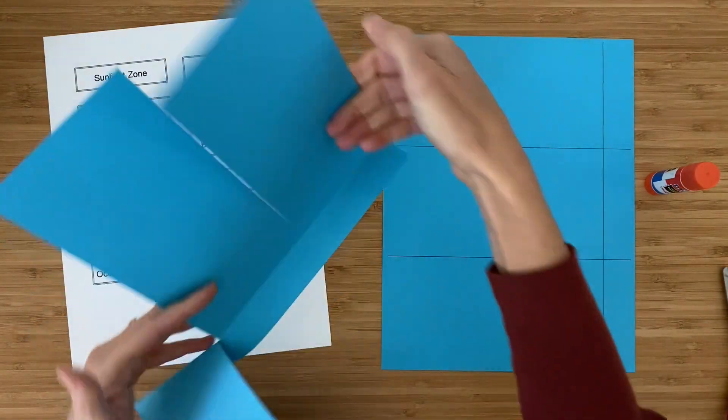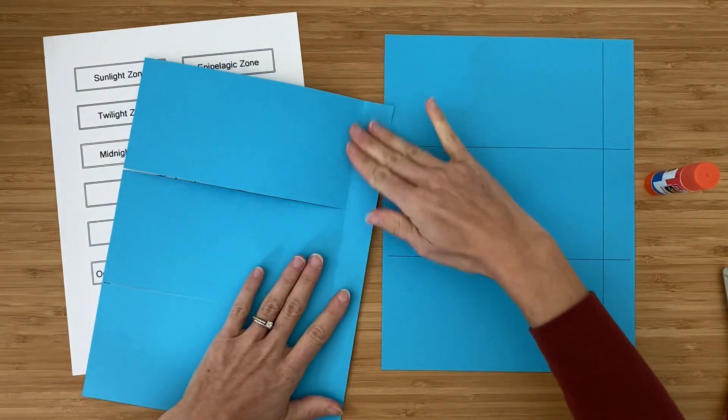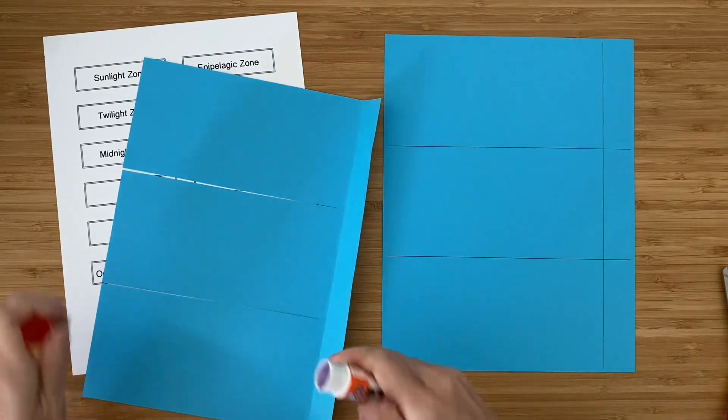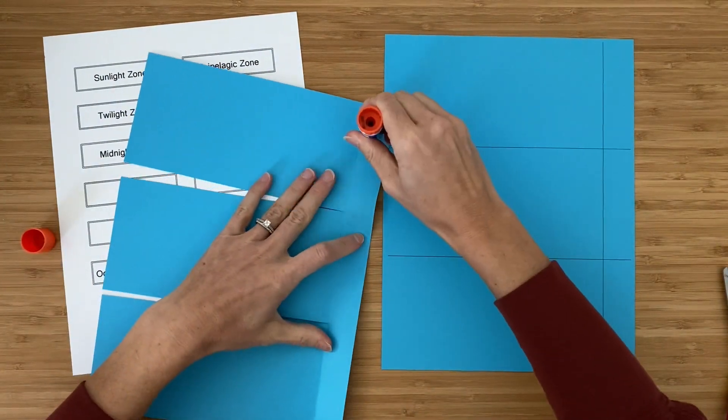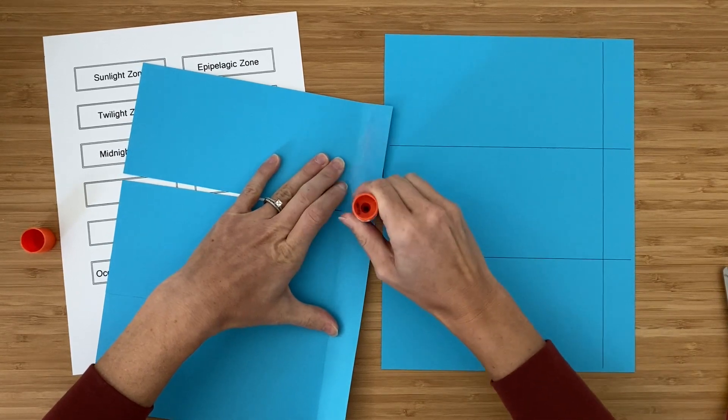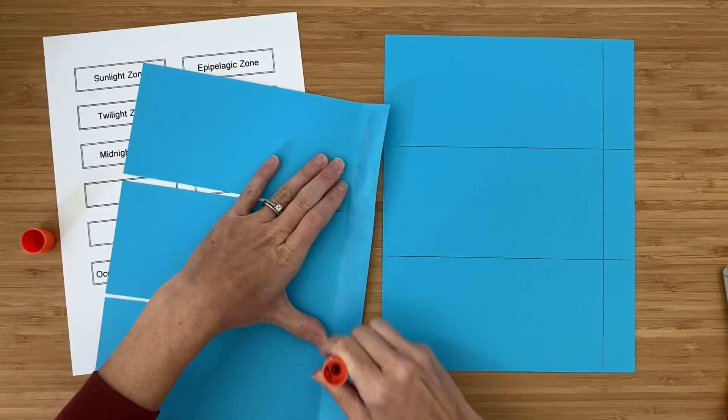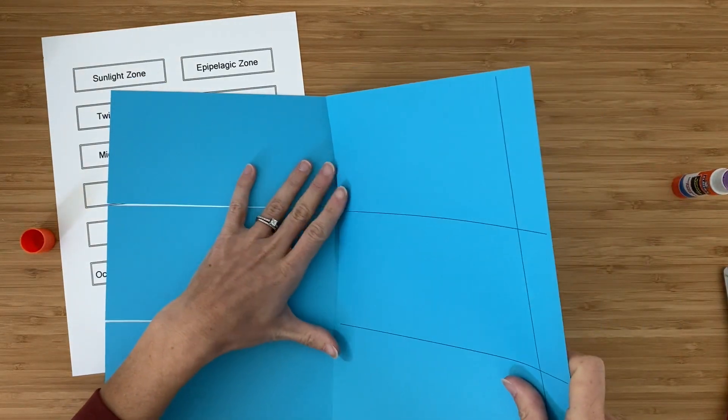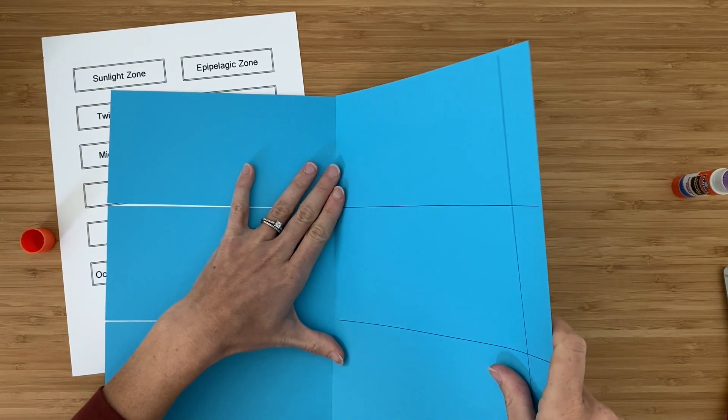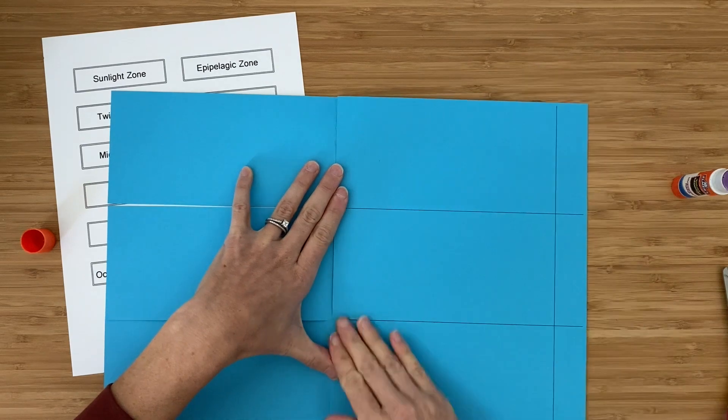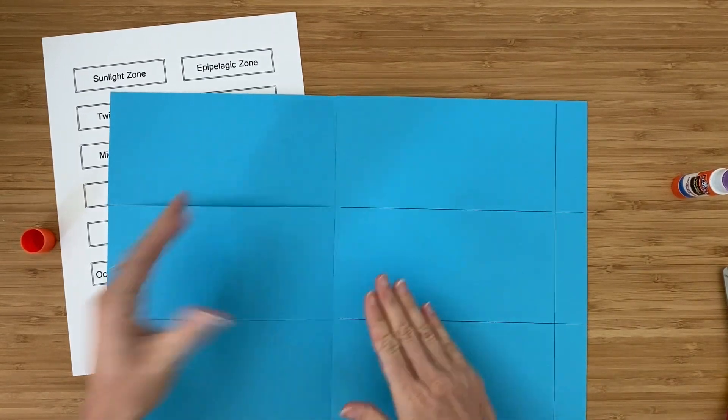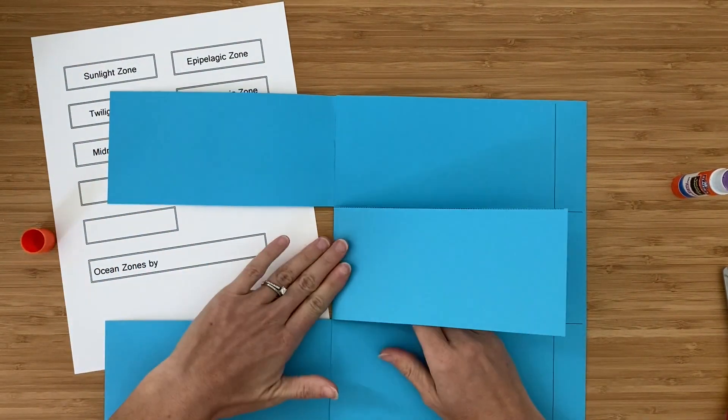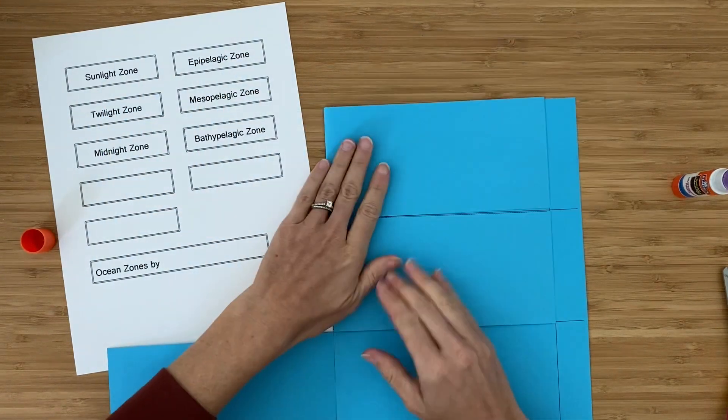Next, take your glue stick and slather glue all over this portion that you just folded backwards. Then slide it behind your other ocean zones page and press down. These pages will go right over the top.